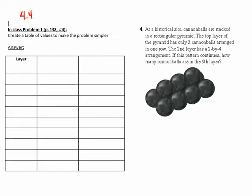So let's take a look at this problem. At a historical site, there are these cannonballs that are stacked in a rectangular pyramid. The top layer of the pyramid has only three cannonballs arranged in one row. The second layer has a 2x4 arrangement. If this pattern continues, how many cannonballs are there in the ninth layer?